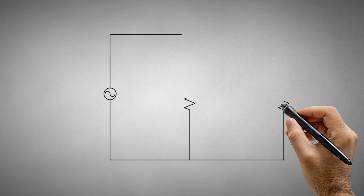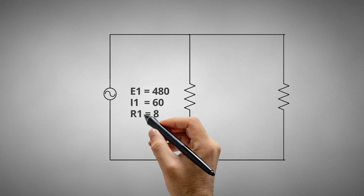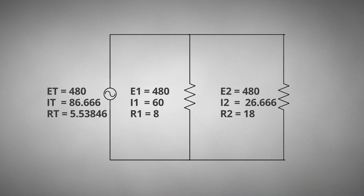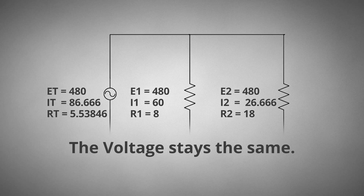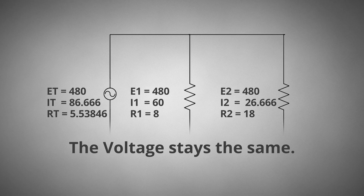Parallel circuits have a few more rules and calculations that need to be performed. While amperage is additive, it is the voltage that stays the same in a parallel circuit. There is also a special formula for finding total resistance. In a parallel circuit, the voltage across any part of the circuit is the same as the total voltage — the voltage stays the same.